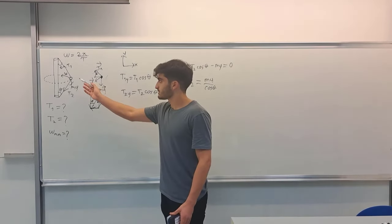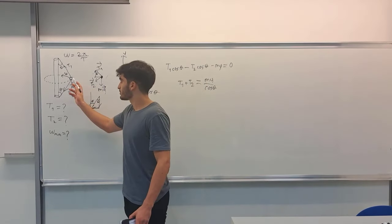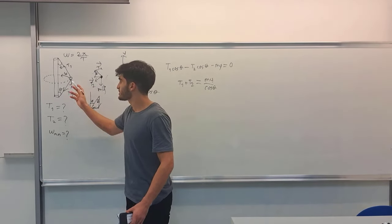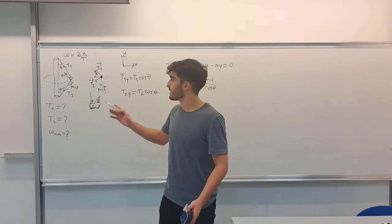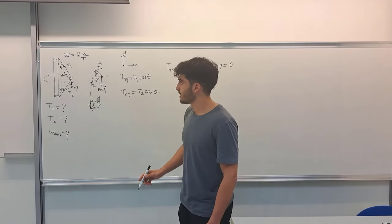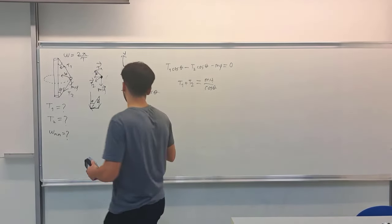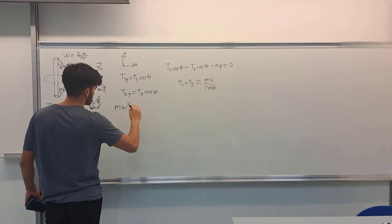Now, we should consider the centripetal force. In order to keep his angular motion, this ball should be exerted by the centripetal force. So what is the centripetal force? We can calculate it by m times omega squared times r. R is the distance between this ball and the stick.